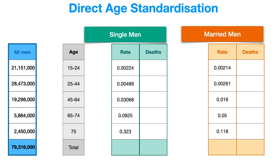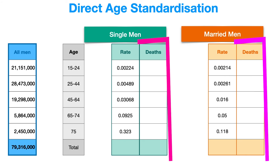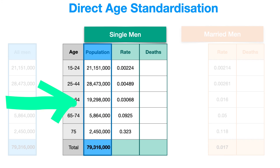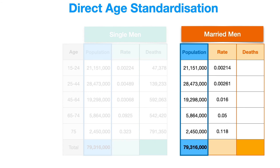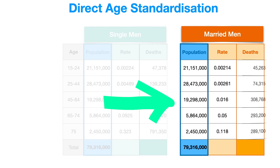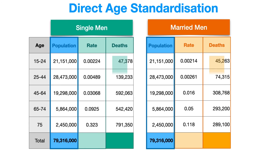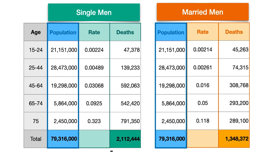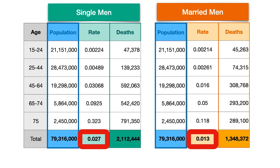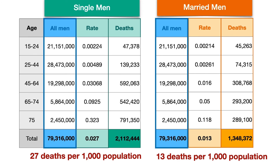Now we take that standard population structure and drop it into both tables — for single men and for married men — and calculate the number of deaths we would expect in each. We drop the standard population into the single men table, calculate expected deaths, then drop it into the married men table and calculate expected deaths there too, then add them up to get a total number of expected deaths in both groups. Since mortality rate is deaths divided by population, we now have an age-adjusted mortality rate in each group that can be compared. Single men have an age-adjusted mortality rate of more than double that of married men.